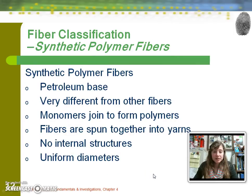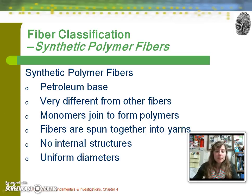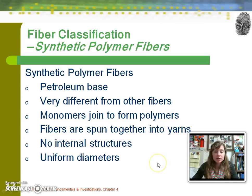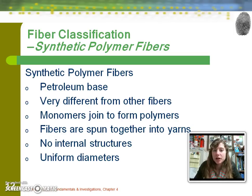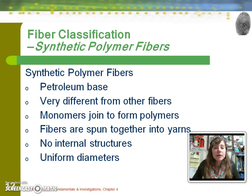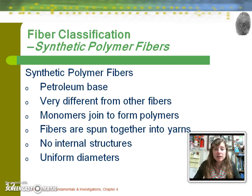A couple of things about synthetic polymer fibers: they're petroleum-based, different from naturally occurring fibers, and constructed to have certain characteristics. Monomers, which are small single units, repeat to form polymers. Fibers are spun together into yarns and they have uniform diameters. This is important — when you look at a section of fiber under the microscope, if it has variation in diameter it may be a natural fiber, but if it is very uniform in diameter under the microscope, it is likely to be a synthetic fiber.